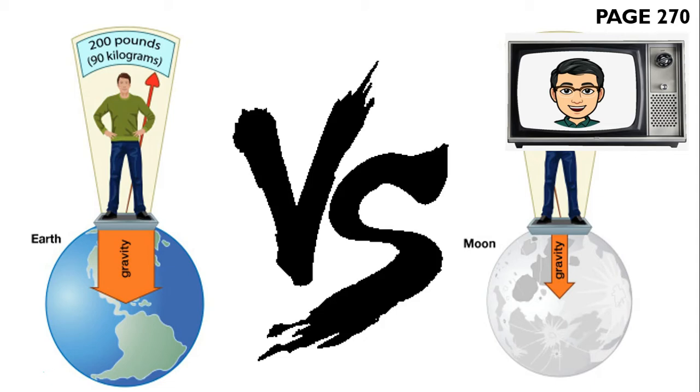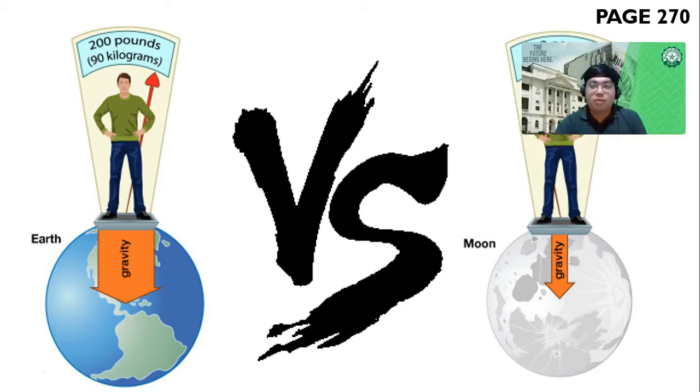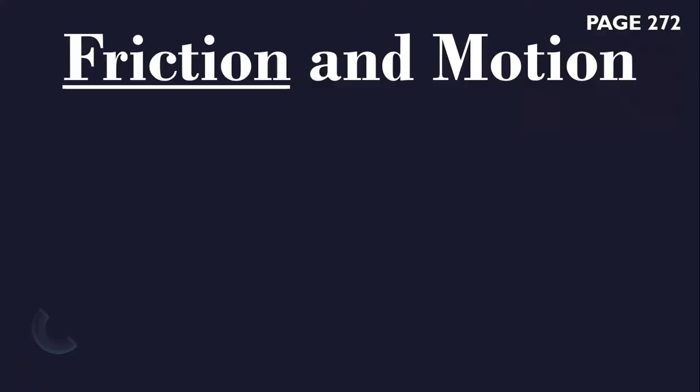Analyze this picture. A man with 200 pounds, or 90 kilograms, is weighted here on Earth by its gravity compared to the moon. His weight is different.